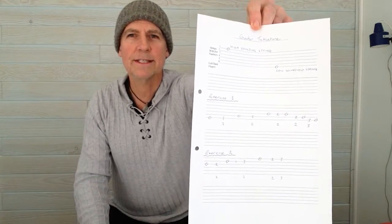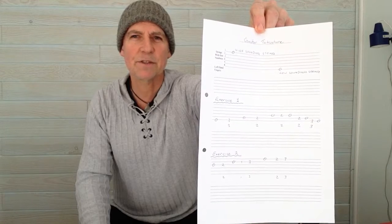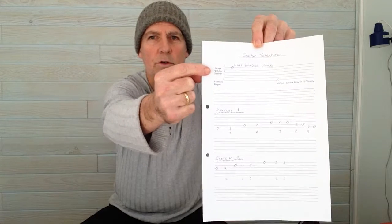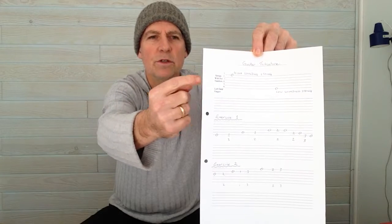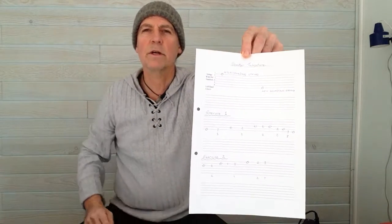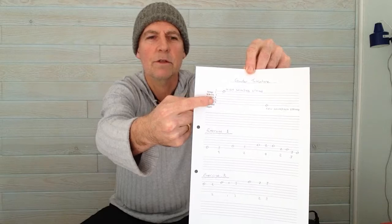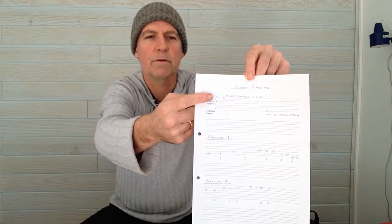On this page you can see that I have lines going across the page in sets of six. At the top of the page on the first line it says 'strings with fret numbers,' and that refers to the six lines going across the page. The six lines represent the strings of the guitar, and the numbers going down the side at the beginning represent which string is which, numbered from one to six.